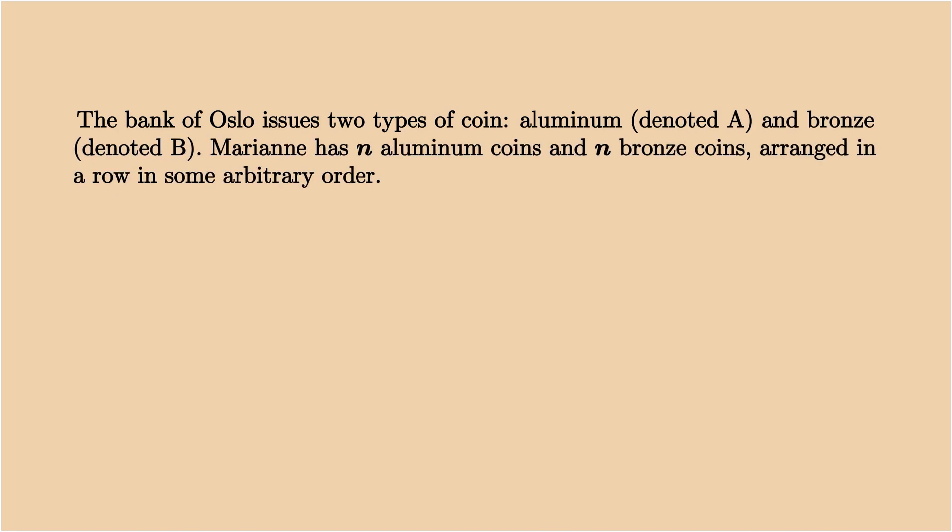The first problem is a single player game. The bank of Oslo issues two types of coins, aluminum and bronze denoted by A and B. Marianne has n coins of each type arranged in a row in some arbitrary order.